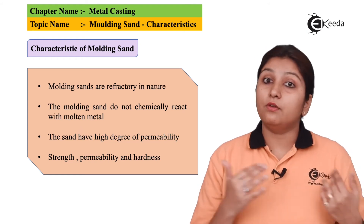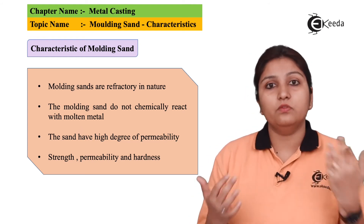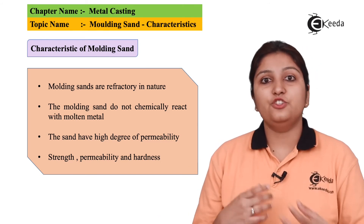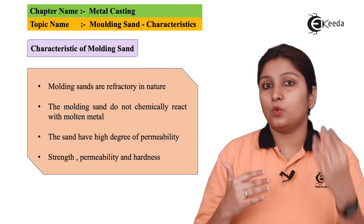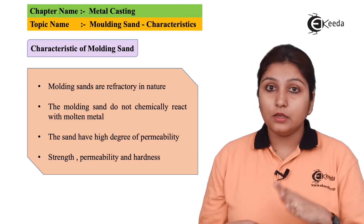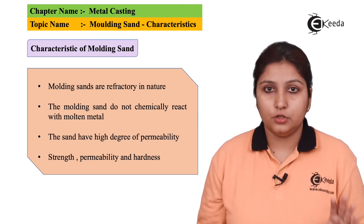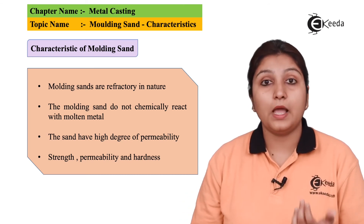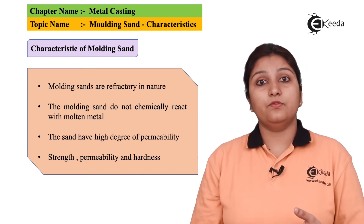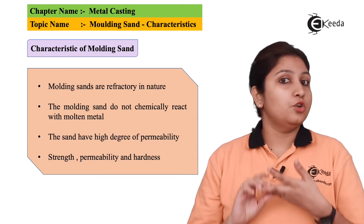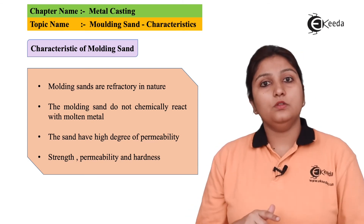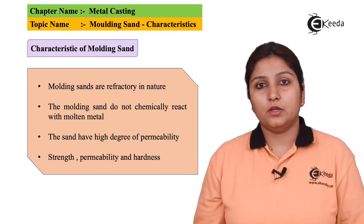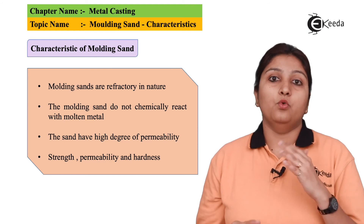Now, a very important property: the chemicals in the metal can react with your sand or with the pattern. When it reacts with the sand, it changes its properties or can sweep away the sand. So sand should be chemically neutral — it should not be chemically active. These are some key properties: highly permeable, refractory, chemically neutral, and having strength and hardness.